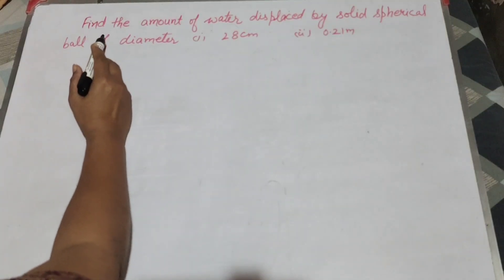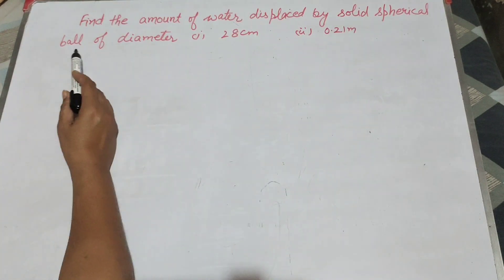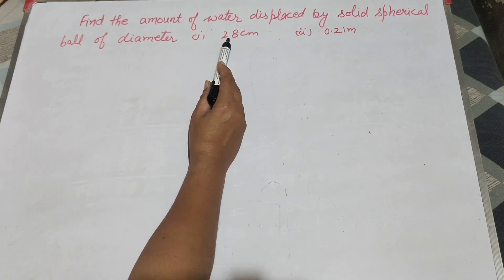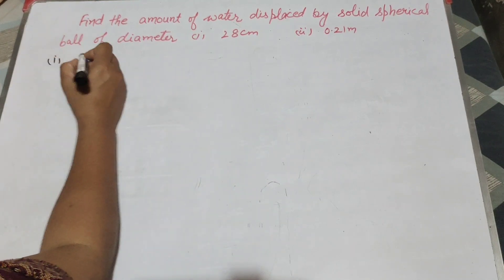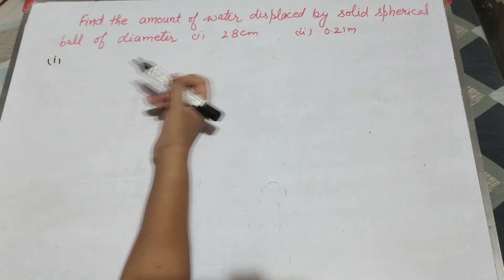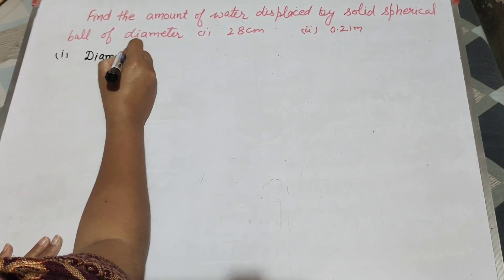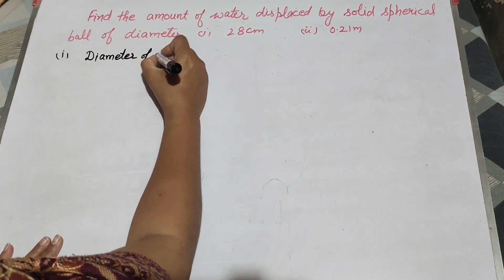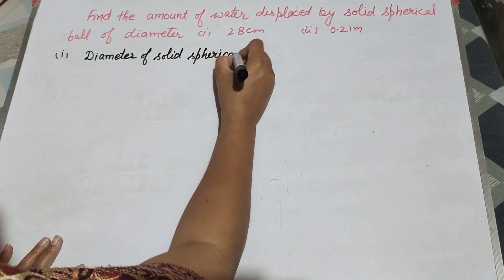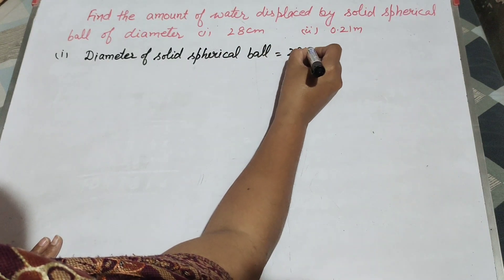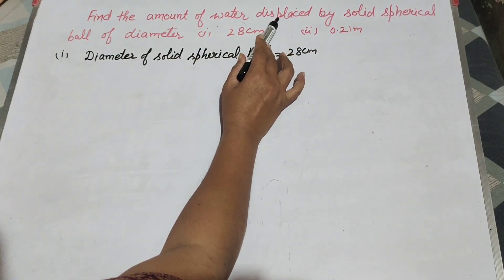Hello friends, welcome to my channel. In this video we discuss the question: find the amount of water displaced by a solid spherical ball of diameter 28 centimeters, and in the second part, 0.21 meters. So we move to the first part. Given is the diameter of solid spherical ball — it is 28 centimeters — and we find the amount of water displaced by this solid ball.